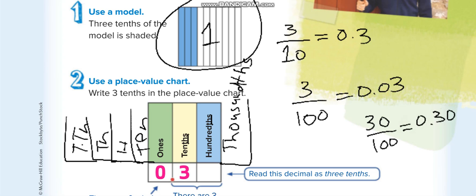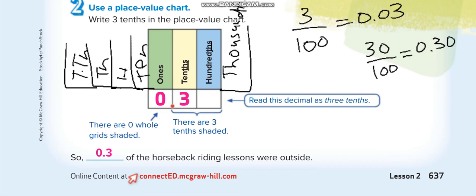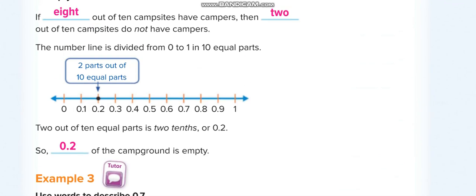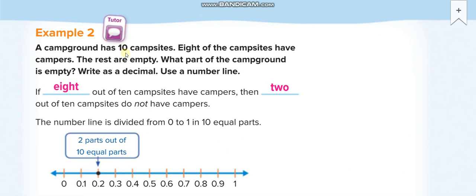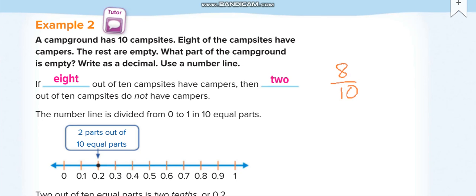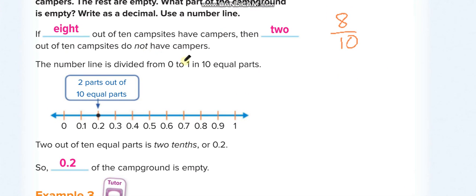Okay, this one now. Here a campground has ten campsites. Eight of the campsites have campers, so eight out of ten, and remaining how much? Two out of ten. And the decimal for it: the denominator shows the place value tenths, because we divided one whole into ten parts. So two is what? Tenths. 0.2.